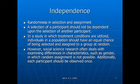Independence refers to the fact that the selection of a participant is not dependent upon the selection of another participant, and that once assigned to a group, that participant doesn't appear in any other group. In a study where treatment conditions are utilized, individuals in a population should have an equal chance of being selected. But often in social science research, we look at demographic characteristics, which make random assignment impossible. For example, I can't randomly assign somebody to a gender, but I can ensure that a person is only observed once — if they're in one group, they're not in another group.